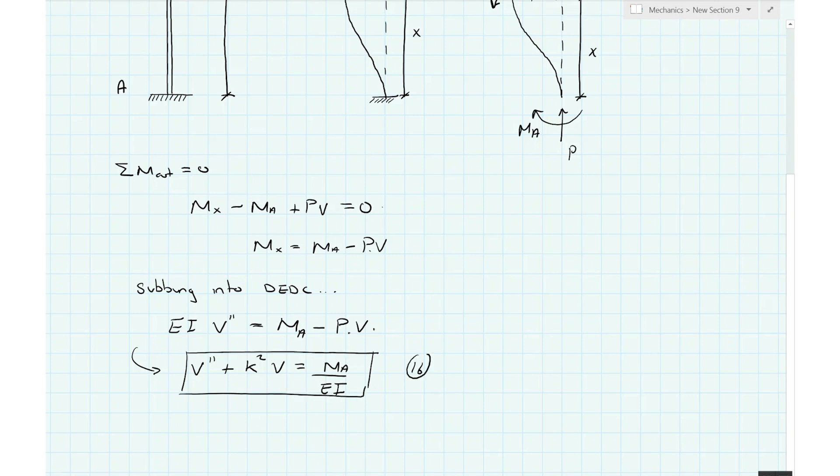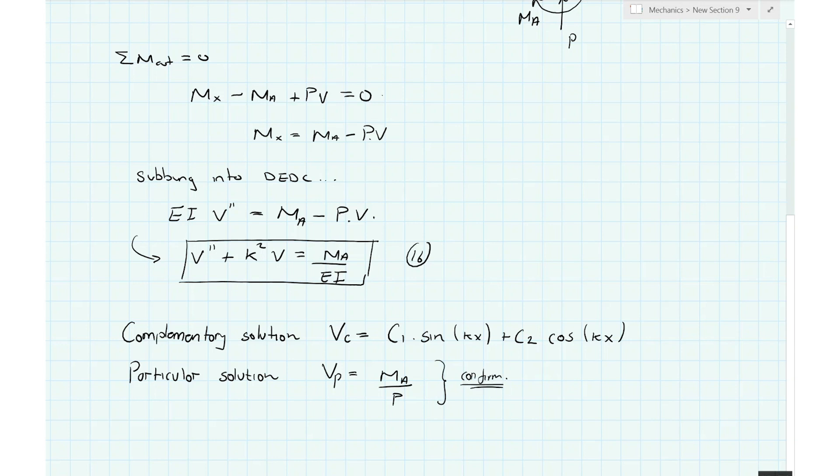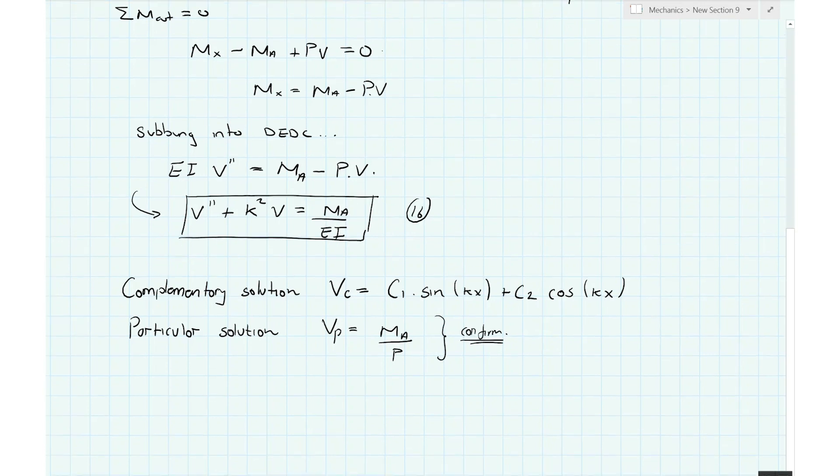So this is the governing differential equation for a fixed-fixed column. Now the process follows exactly the same procedure as before. We have a general solution that's made up of a complementary solution, which we saw on our very first derivation for the pin-pin column, and a particular solution. Again, following the exact same procedure, you can work that out fairly straightforwardly. So I'm just going to state the solutions here. We saw that when we looked at our pin-pin column, and then our particular solution Ma over P. Again, I would just suggest to you to confirm that yourself following the procedure, exact same procedure, very straightforward that we used in our previous derivation. And so with that, we can state the general solution.